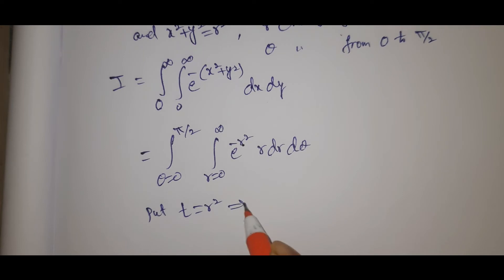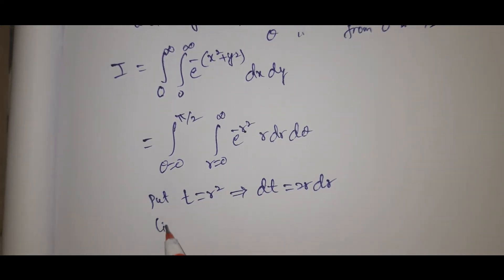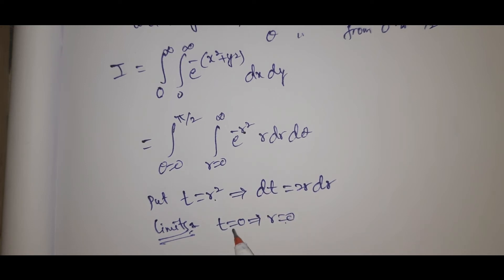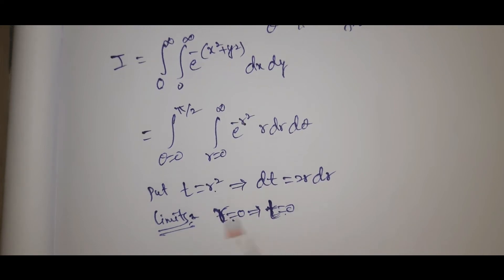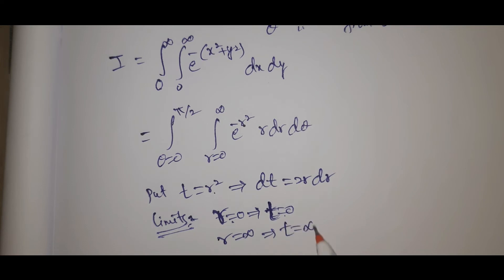Put t equal to r square. That implies dt equal to 2r dr, so r dr equals dt by 2. If we change the limits: r equal to 0 gives t equal to 0, and r equal to infinity gives t equal to infinity. So the limits remain the same: 0 to infinity.